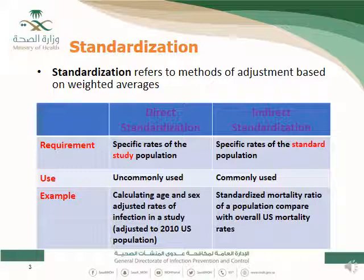There are two types of standardization: direct standardization and indirect standardization. What we use in SIR is indirect standardization, not the direct one. Direct standardization means you need to have specific rates of the study population — and basically in infection control we don't have this. Usually we have a benchmark, and we are looking to create the specific rate of our study population, which is the opposite of what we have.